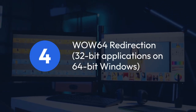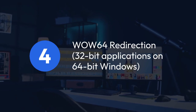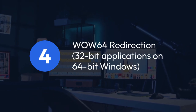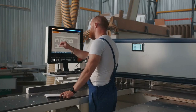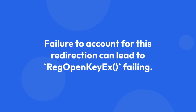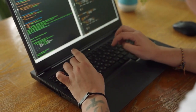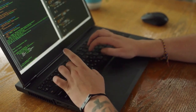4. Wow64 redirection — 32-bit applications on 64-bit Windows. If you're running a 32-bit application on a 64-bit Vista system, remember the Wow64 redirection. 32-bit applications usually access the 32-bit registry view via the Wow6432Node. Failure to account for this redirection can lead to RegOpenKeyEx failing. If your application is 32-bit, make sure you're using the correct key path within the Wow6432Node subtree.